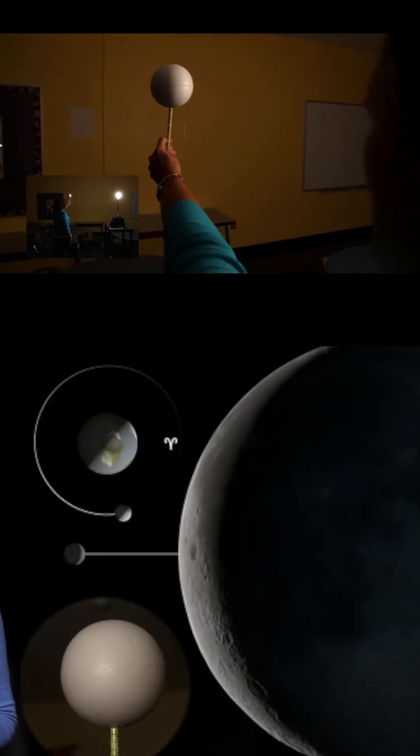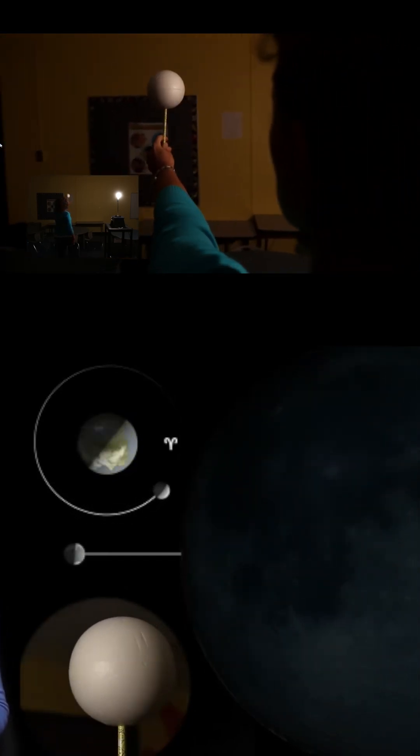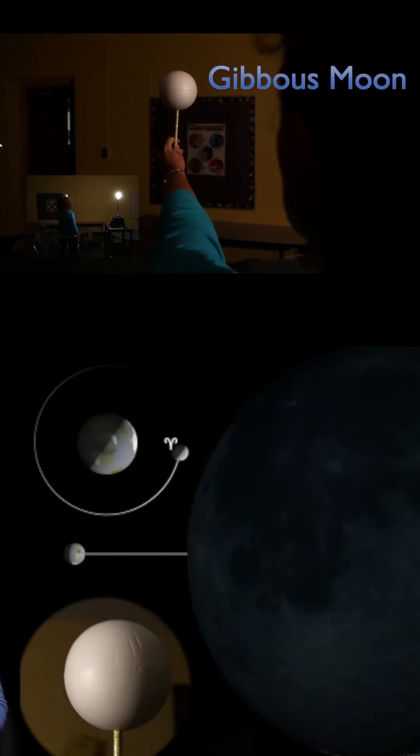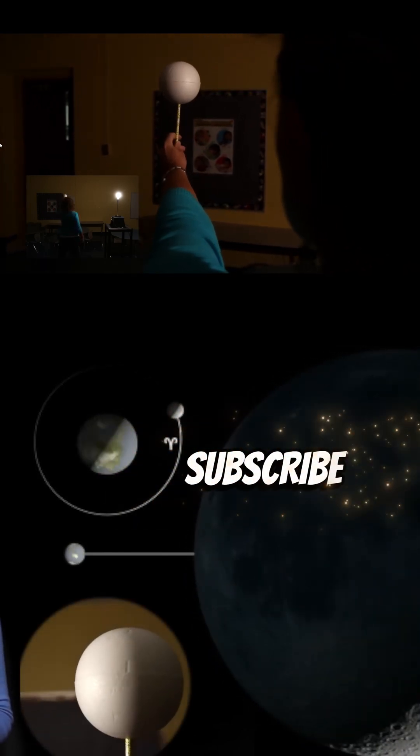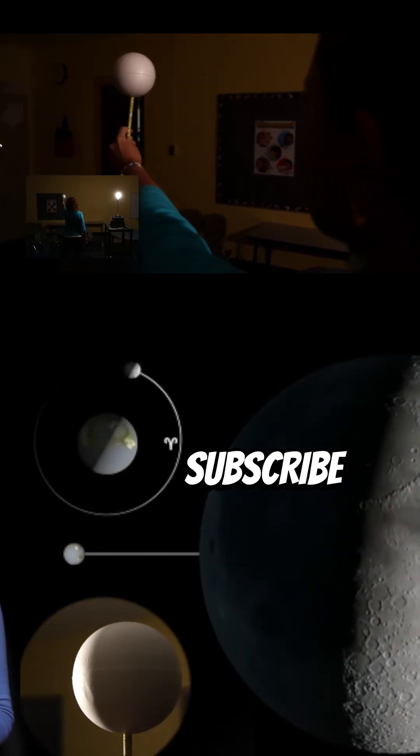As we keep orbiting, we see almost the whole lighted side. We call that a gibbous moon. Then, when we can see the entire lighted half of the moon, that's a full moon.